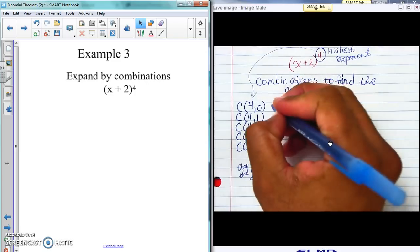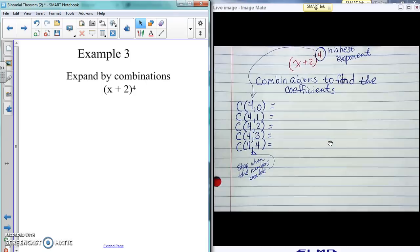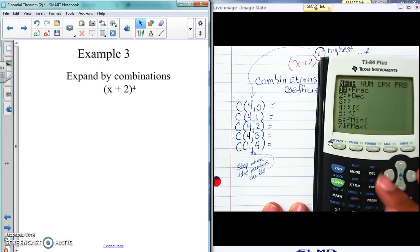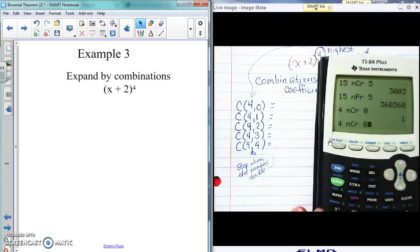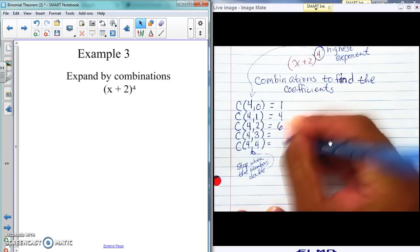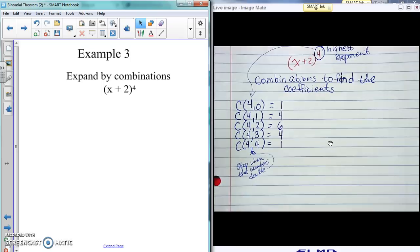In our calculator, we already know how to do combinations. So we're gonna do that really quickly. I'm gonna do a couple of them just to refresh your mind. So we're gonna do four, hit math, go to the left, number three, zero, one, two. So here we get one, we get four, we get six. If you do these two in the calculator, you'll get four and one again. And so those are our coefficients, just like before.